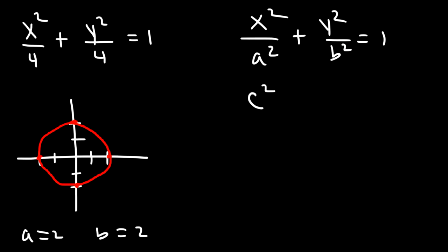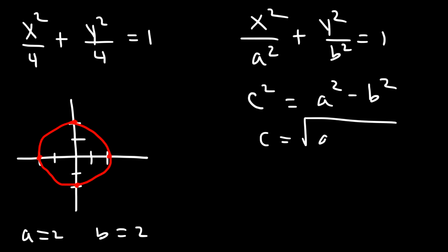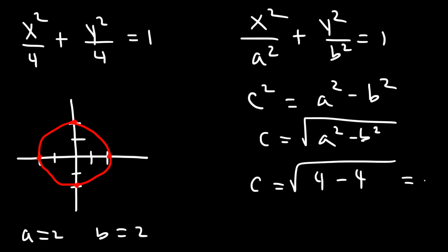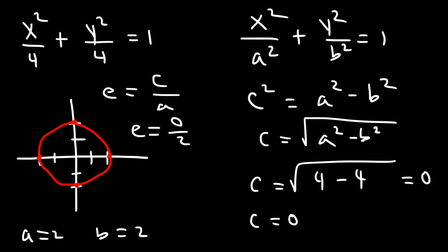For an ellipse, c² = a² − b², so c = √(a² − b²). Since a² = 4 and b² = 4, c = 0. c will always be 0 when dealing with a circle. The eccentricity is c/a = 0/2 = 0. So whenever you have a circle, the eccentricity is 0, because a circle is perfectly even everywhere.